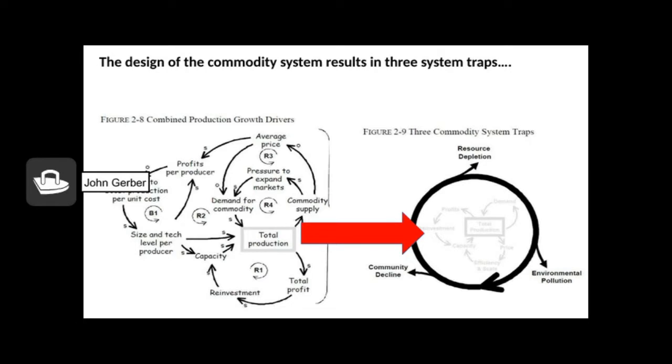So to review, we've got an increase in total production. Let's follow the model around. Production increases, commodity supply increases, supply increases, average price decreases, price decreases, profits per producer decrease, profits per producer decreases, pressure to increase production and get bigger. Size and technology level per producer increases. As the size gets bigger and the technology gets bigger, it increases total production.